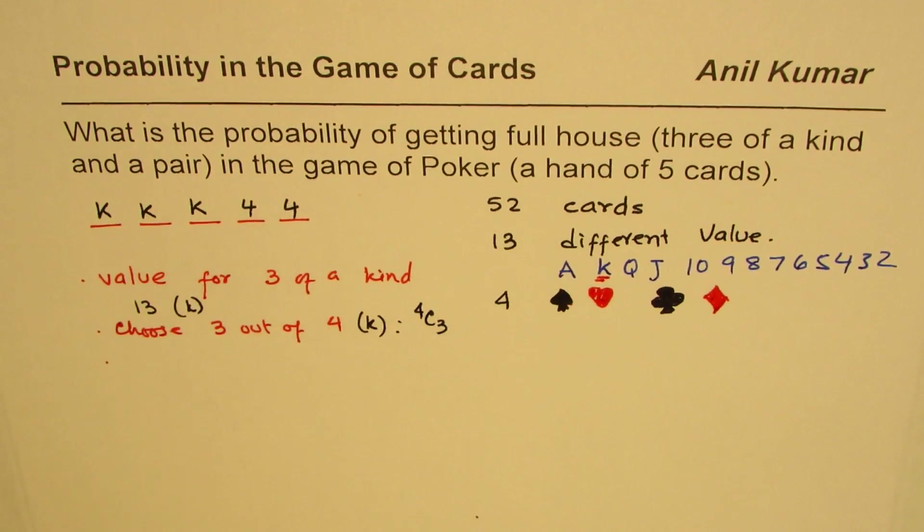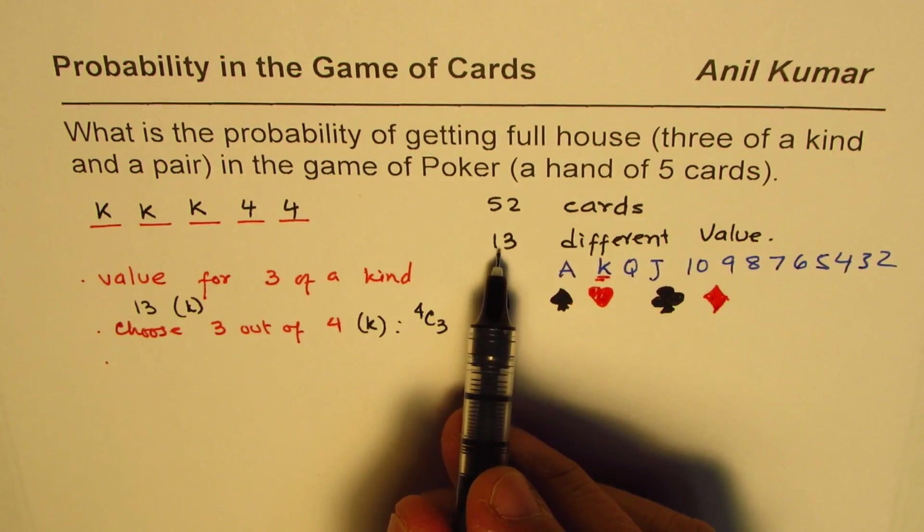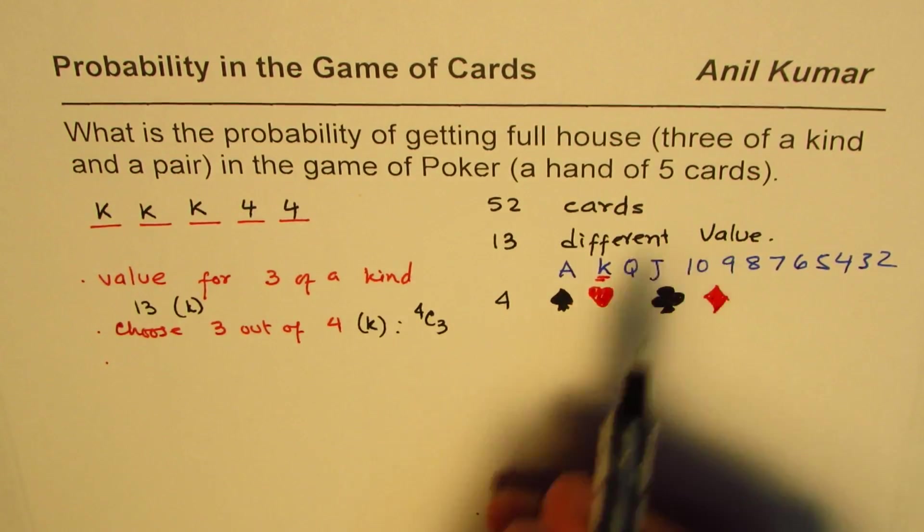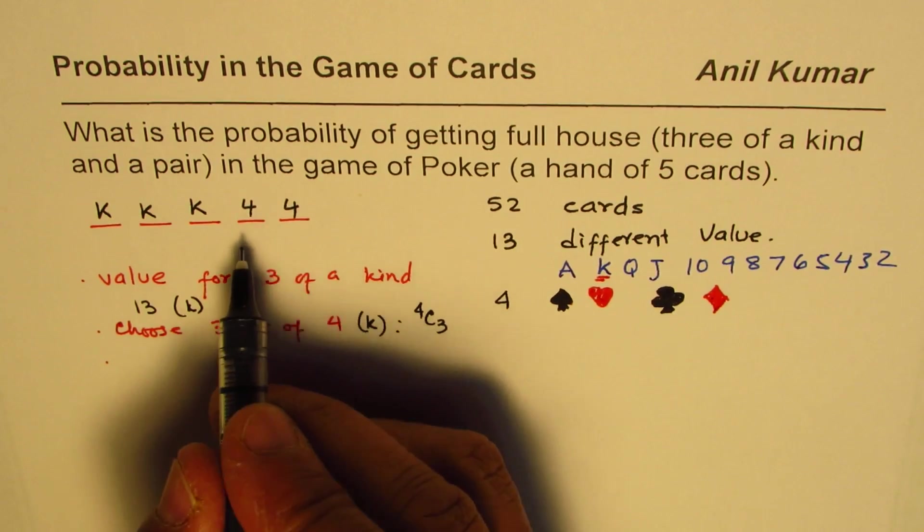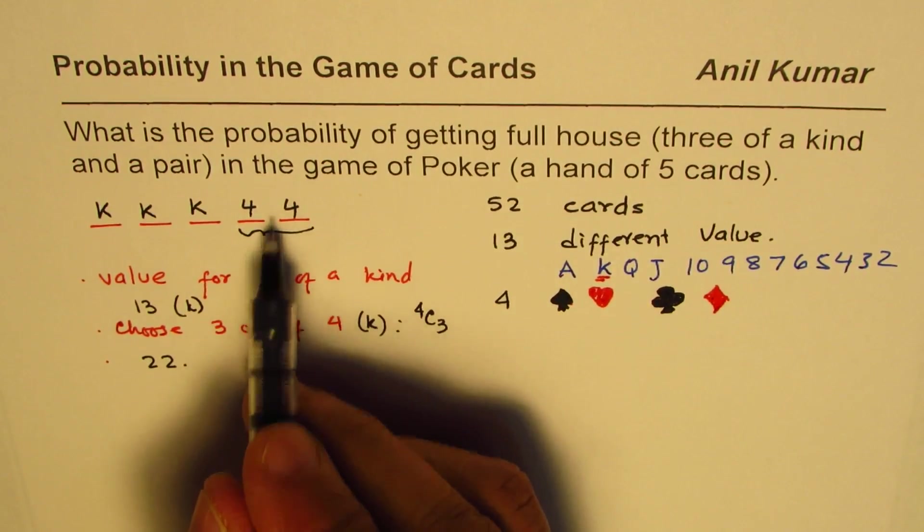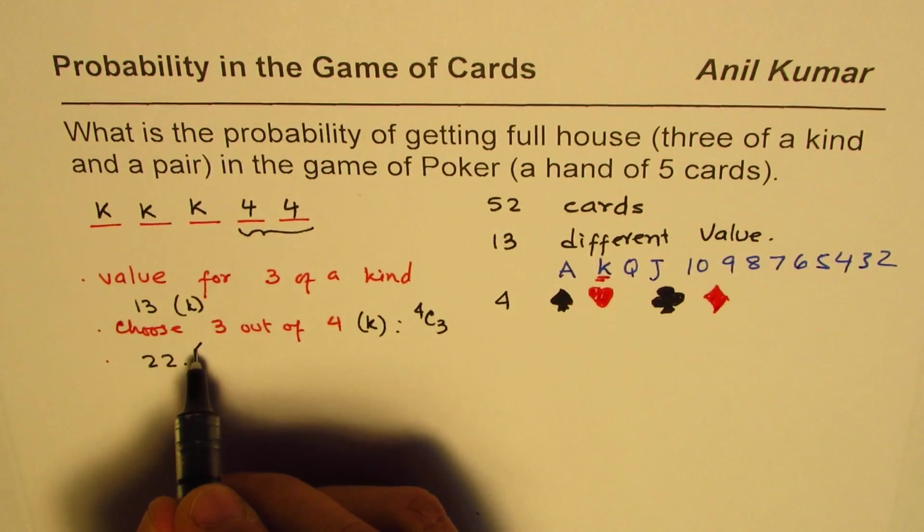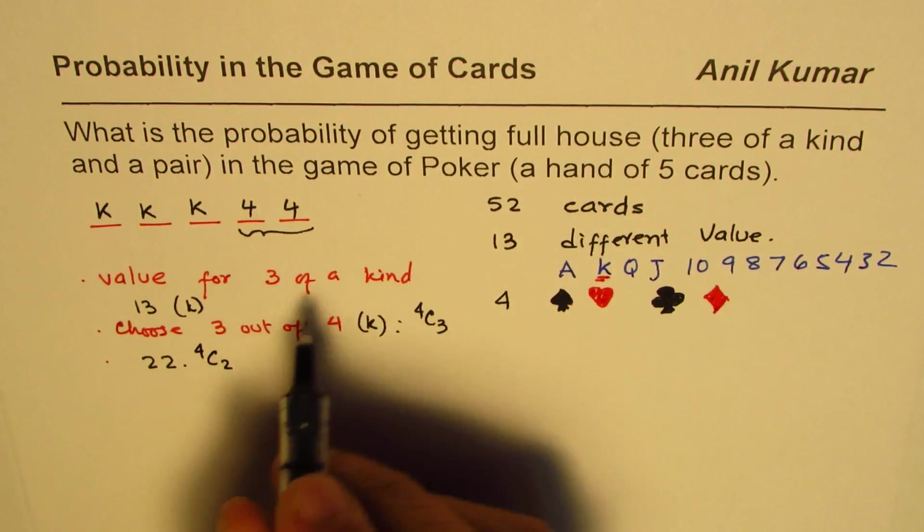Now we have to select the value for the next one. We already selected one, so we are left with twelve different values, right? So that means for the next option we have twelve. And once we decide on the value we have to select two out of four. So twelve 4C2. That becomes the combination correct.